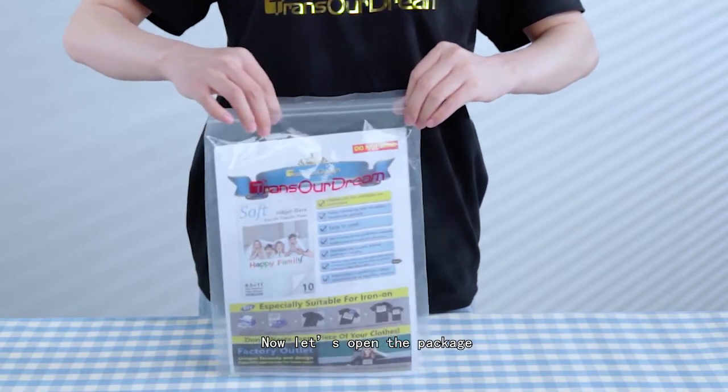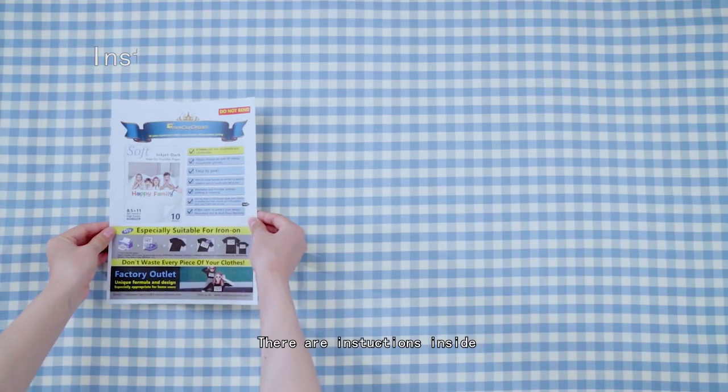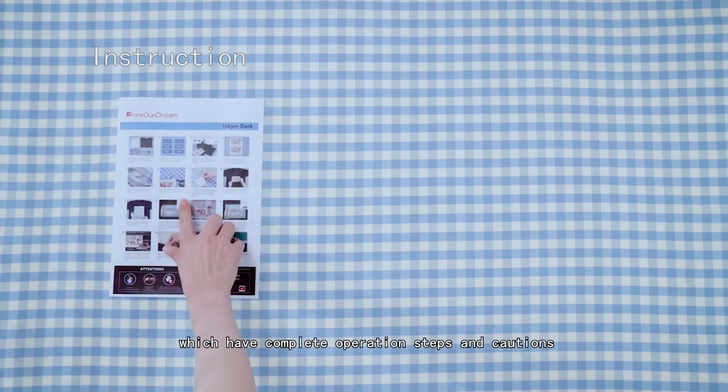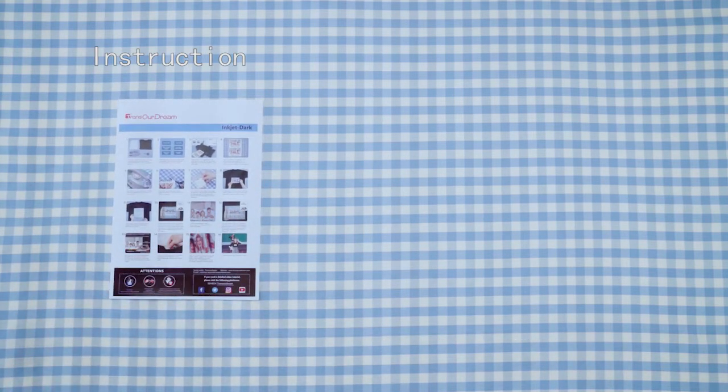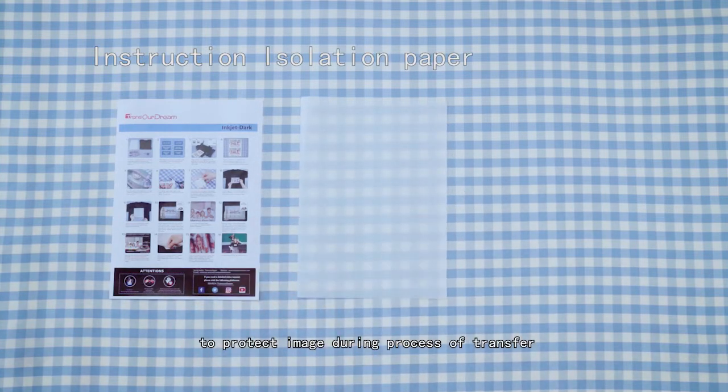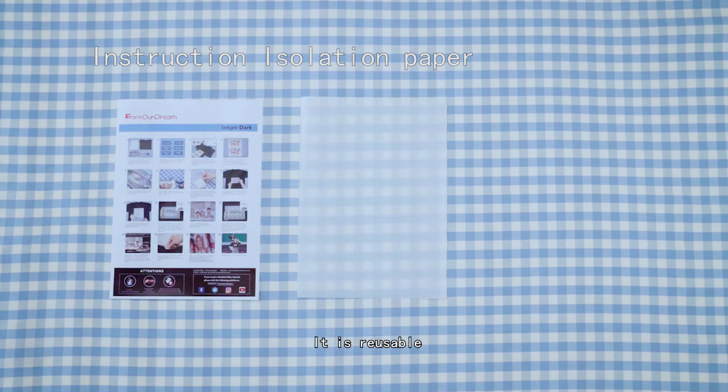Now let's open the package. There are instructions inside which have complete operation steps and cautions. This is a silicone paper to protect the image during the process of transfer. It is reusable.